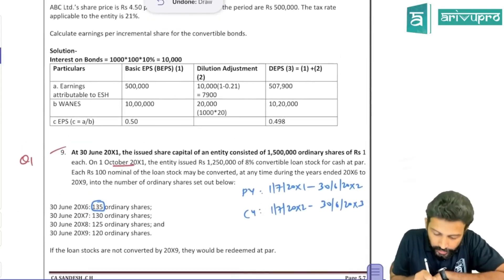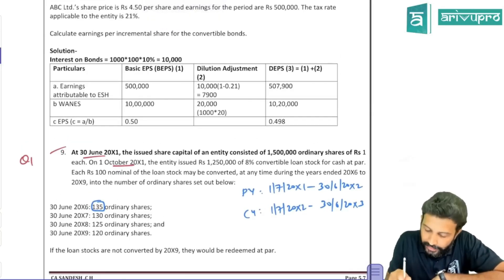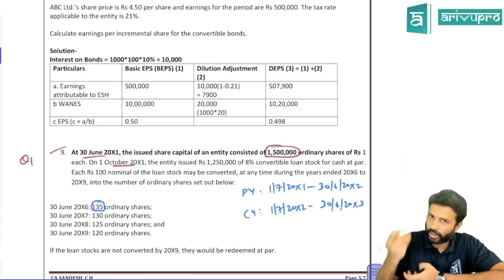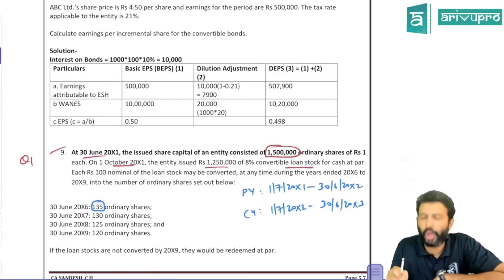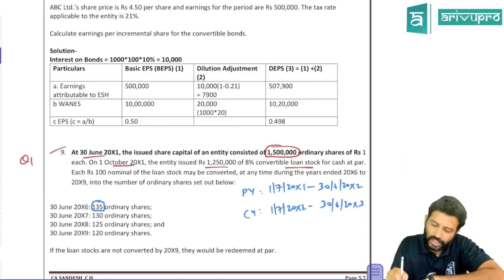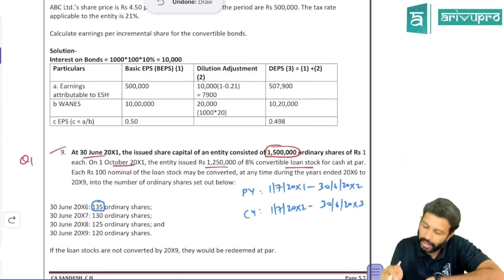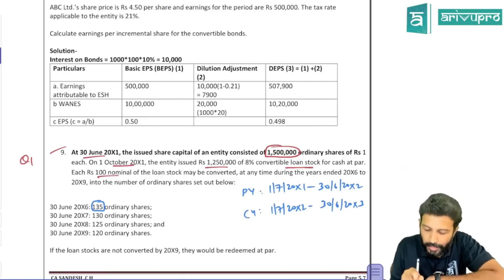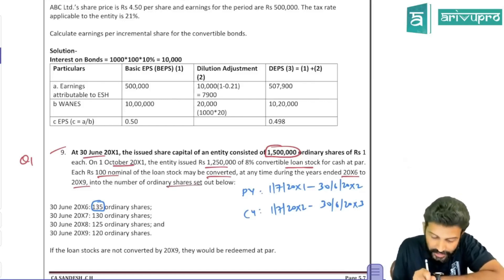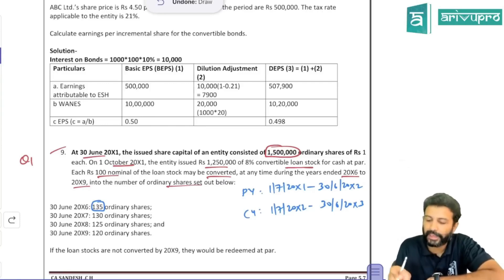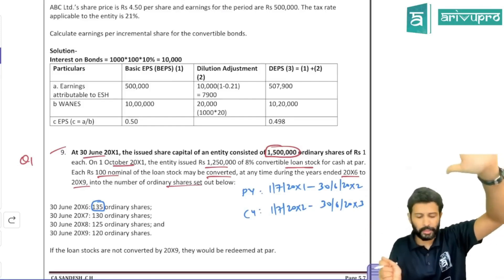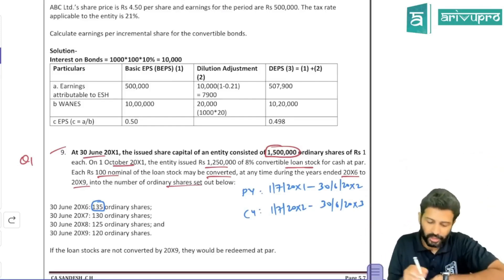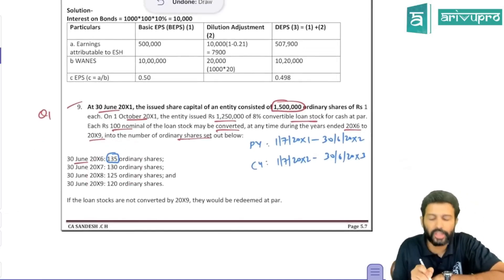Question 9: On 30th June 20X1, the issued share capital consisted of 15 lakh ordinary shares of Re.1 each. On 1st October 20X1, the entity issued Rs.12,50,000 of 8% convertible loan stock — essentially convertible debentures — at par. Each Rs.100 nominal value of loan stock may be converted at any time during 20X6 to 20X9 into a number of ordinary shares as specified.